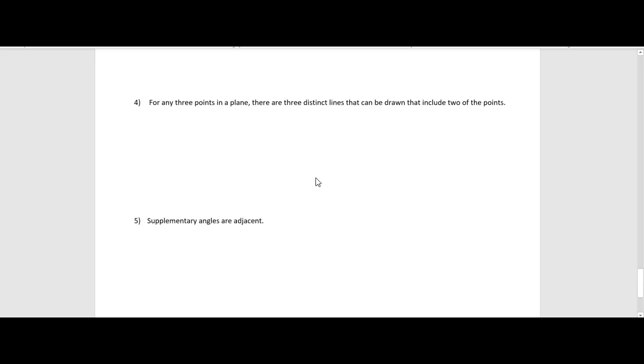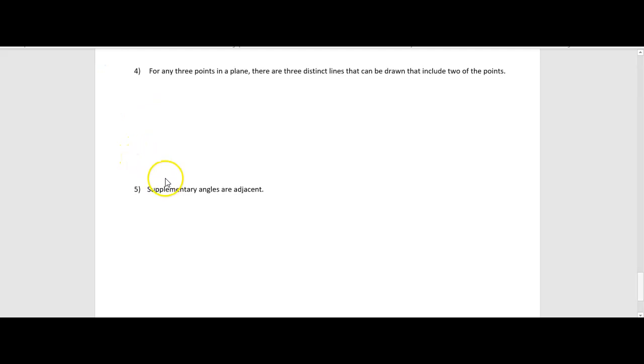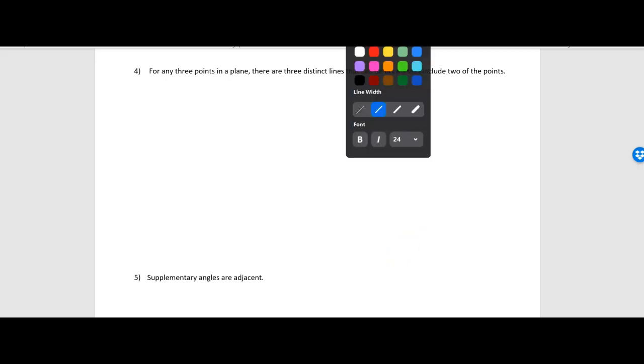Let's do number four. So number four says, and I'm going to give us some more space here, because we're going to draw some diagrams. So it says for any three points in a plane, there are three distinct lines that can be drawn that include two of the points. So it's a little wordy, but let me draw an example of what they're saying. So if I have three points that are in a plane, then there are three distinct lines. So one, two, and three. And each of those lines must have two points on each of them. And we can see that in this case, they do. So your goal would be to try to find is there a way for me to draw these three points so that I can't draw three different lines. That's what distinct means three different lines.